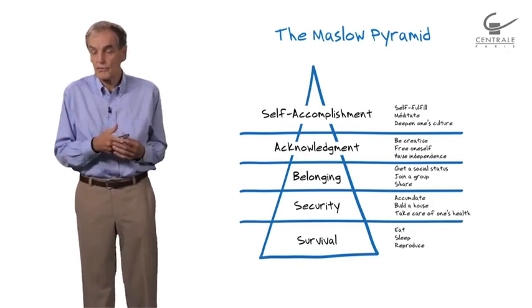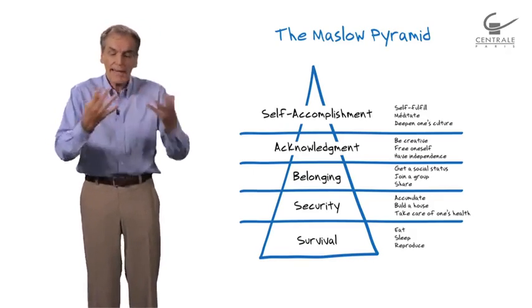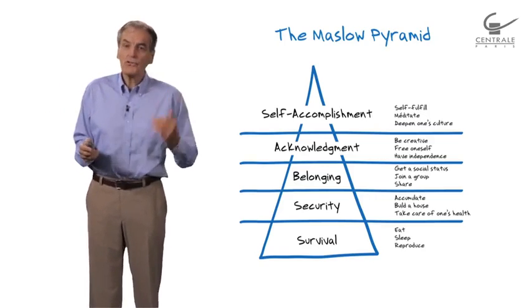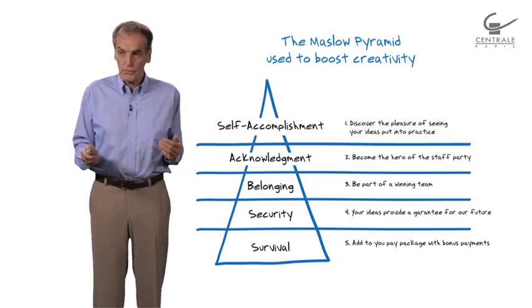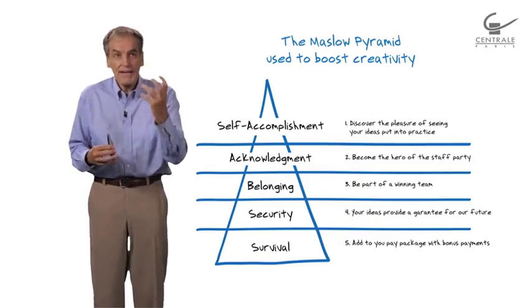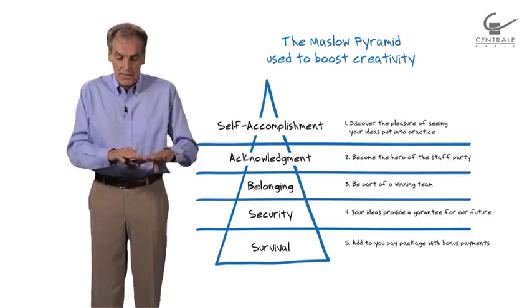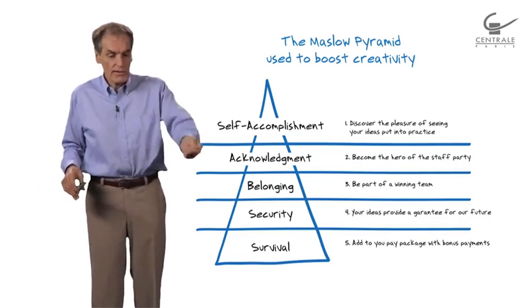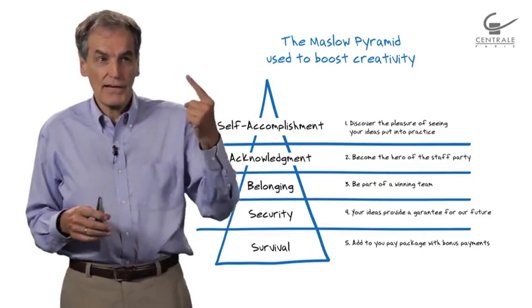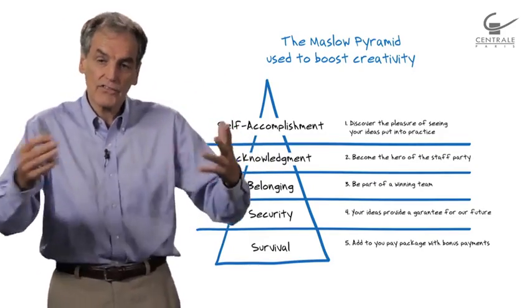Let's take creativity. Imagine you want to encourage people to propose new ideas. You can use the pyramid. Look at this - you can see five different ways to encourage people to propose new ideas. At the bottom level, you say 'give an idea, I give you money.' Number one. At level two, give an idea and you have a guarantee you'll stay within this company.